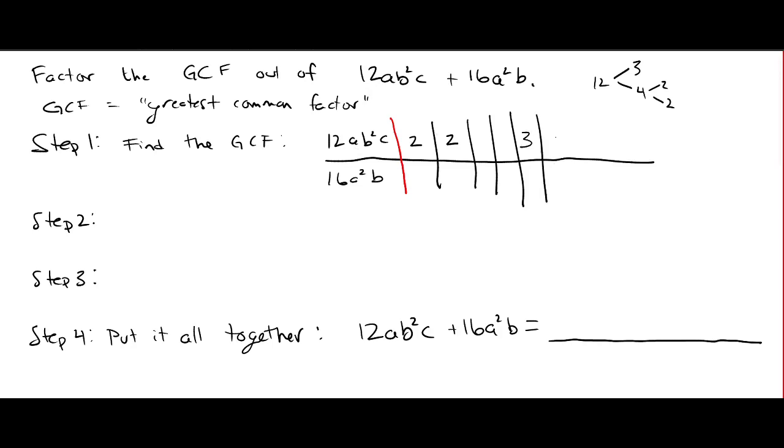And then we've got a, and then b squared, so b times b, and a c there. These are all the primes that go into 12ab squared c.